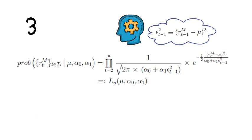So the U stands for the last time period in your sample. And the μ, the α₀ and the α₁, these are the parameters of your parametric model.